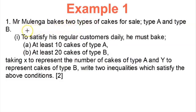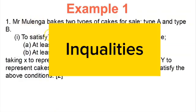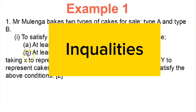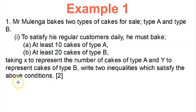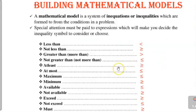In mathematics paper 2 for linear programming, they first give you the information, then they'll ask you to formulate the inequalities. In order for you to formulate those inequalities, there are certain words and inequality symbols that you must be familiar with — that's when you are going to be able to formulate those mathematical models. So let us look at the words and symbols first.